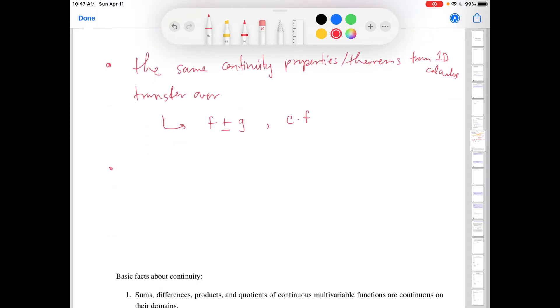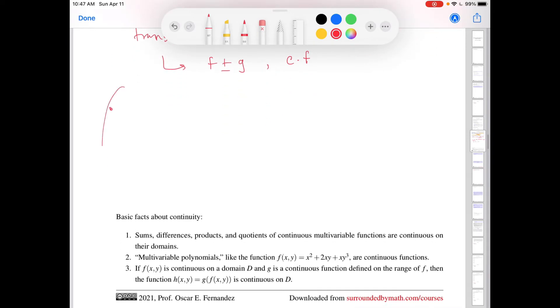And one particularly nice property that transfers over, and I've actually written down some of this stuff down here, is that multivariable polynomials, like this function for example, are continuous functions. So multivariable polynomials in this multivariable context are sums and differences of multiples of terms like this, products of powers of x and y. If we're talking about functions of three variables, it would be products of powers of x, y, and z. Those are called multivariable polynomials. Here's a little example.